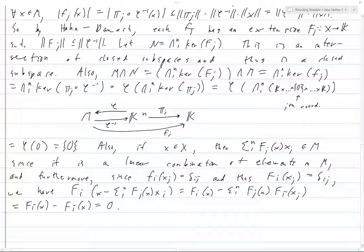And so we have this for all i. And thus, x minus sum from 1 to n, Fⱼ(x)xᵢ is in N.